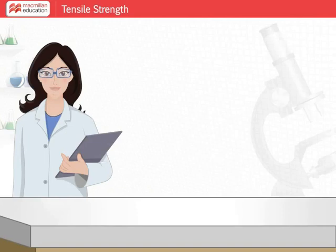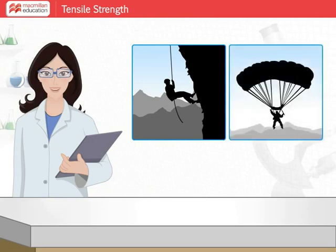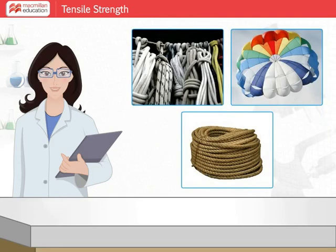Welcome to the science lab. Do you know why nylon is used for making ropes used in mountain climbing and in making parachutes? This is because nylon ropes are very strong and can bear the weights of climbers and parachutes. Various fibers exhibit different properties, therefore a specific fiber is preferred over others to manufacture a particular item.